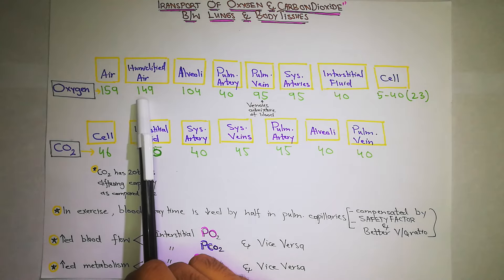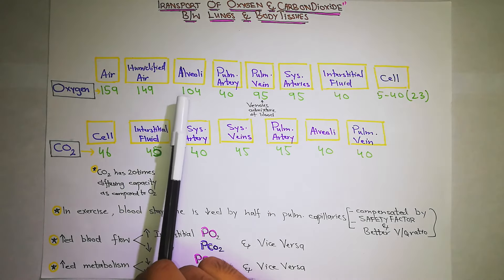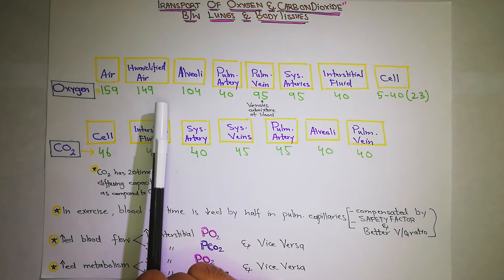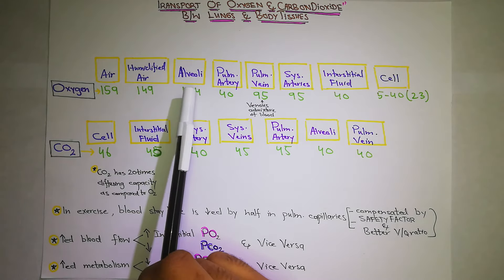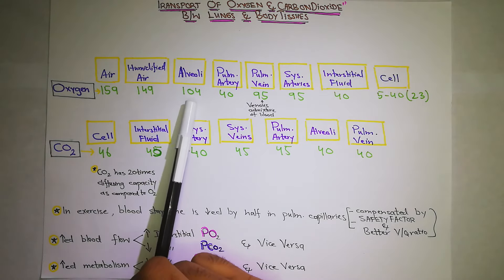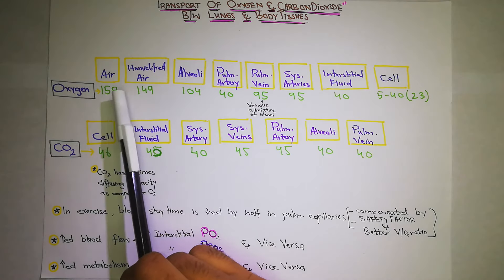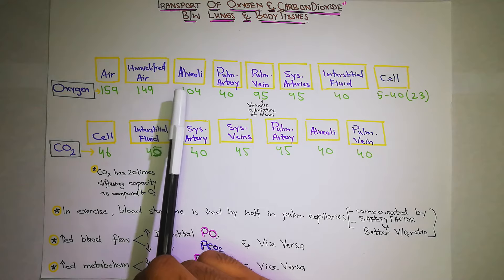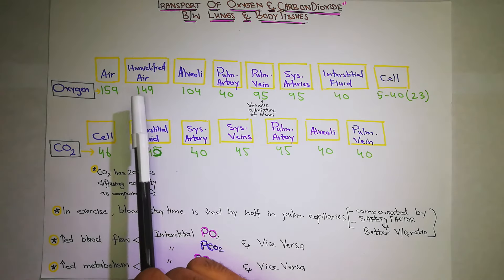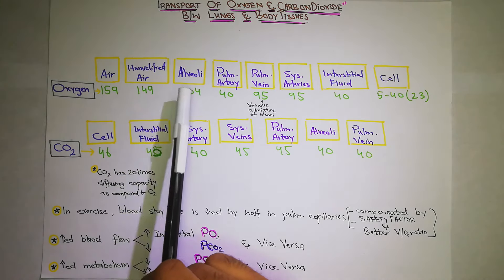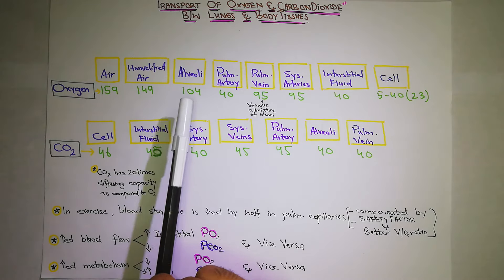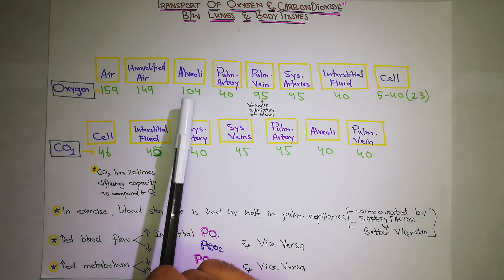اب آپ کہیں گے کہ کیوں یہ 149 سے کم ہو کے 104 mm of mercury پر partial pressure of oxygen آ گیا؟ تو اس لیے آ گیا کیونکہ ہمارے پاس جب ہم سانس لیتے ہیں تو آپ کے tidal volume کے علاوہ پہلے سے lungs میں جو air پڑی ہوئی ہے، وہ اس کے ساتھ mix ہوگی جو ہم باہر سے inhale کر رہے ہیں۔ وہ پہلے سے existing air جو lungs کے اندر تھی اس کے ساتھ mix ہوگی، تو finally ہمارے پاس alveoli کے اندر 104 mm of mercury partial pressure of oxygen بن جائے گا۔